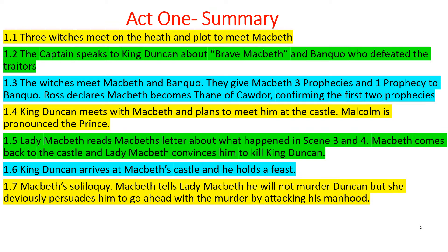Act 1, Scene 1 begins with three witches meeting in thunder, lightning and rain, and then they speak about a character called Macbeth. Automatically the audience in the 17th century are thinking who this character Macbeth is. The witches, representing the supernatural, would have intrigued the 17th century audience because they were a superstitious folk, making them question who is this Macbeth and why are the witches talking about him.